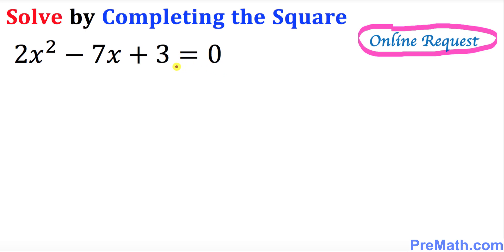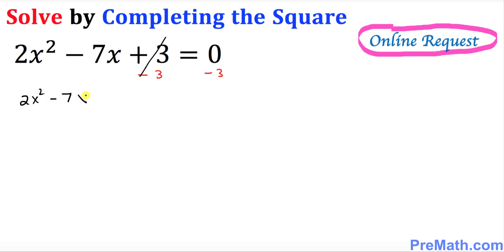The very first step is to make sure that we have only X variables on the left hand side. That means this 3 must go on the other side, so go ahead and subtract 3 from both sides. We get 2X squared minus 7X equal to negative 3.